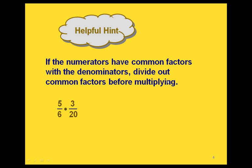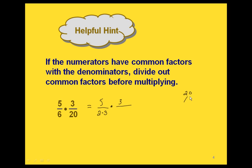A hint to make this much easier is that before you actually do the multiplication, if you can find any common factors between numerators and denominators, divide those out before you start to multiply. So if we have 5 sixths times 3 twentieths, let's write these out with our prime factorizations. For the prime factorization of 20, we would have 4 times 5, which gives us 2 times 2 times 5.